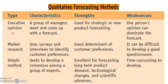Executive opinion is a forecasting method in which a group of managers meet and collectively develop a forecast. This method is often used for strategic forecasting or forecasting the success of a new product or service, and sometimes it can be used to change an existing forecast. Although managers can bring good insights to the forecast, this method has a number of disadvantages. Often, the opinion of one person can dominate the forecast if that person has more power than the other members of the group or is very domineering — think about times when you were part of a group and one person's views dominated.